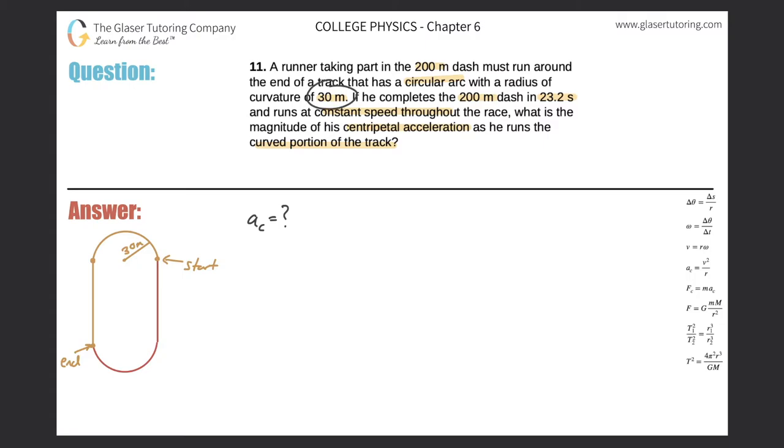They're also giving us some distances and times and whatnot. So more than likely, we're going to be using this formula to start due to the fact that it has a radius in it. And this one doesn't. So I have the centripetal acceleration is equal to the tangential velocity squared divided by radius.